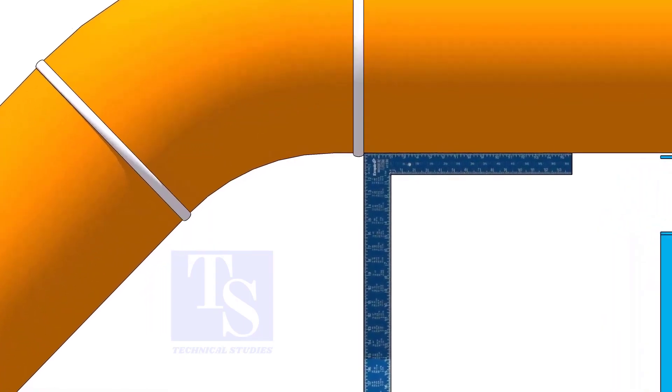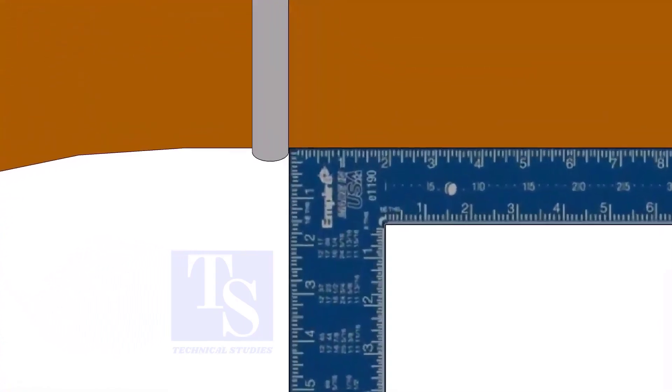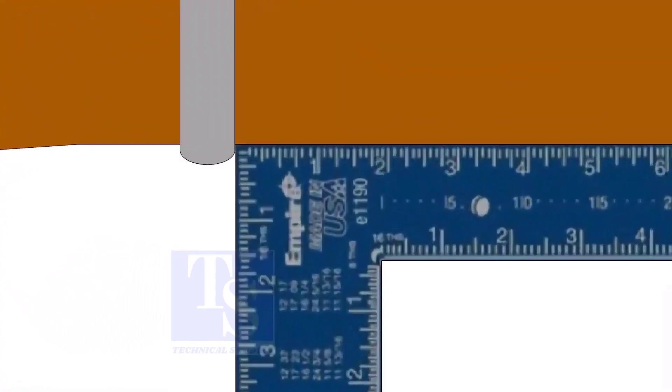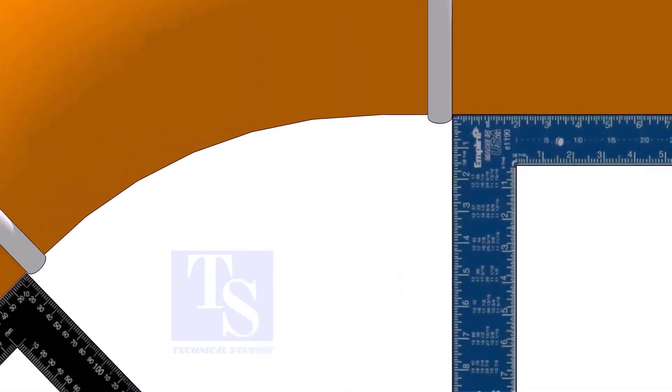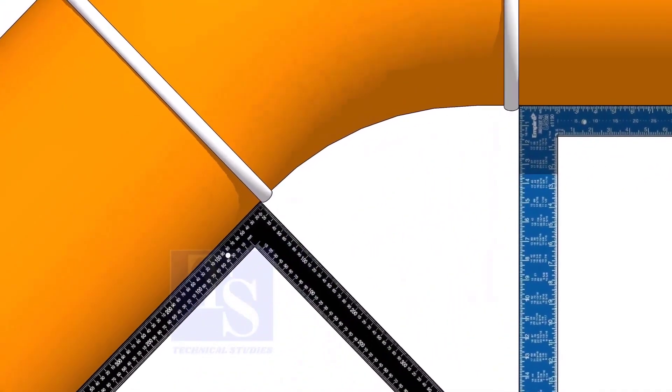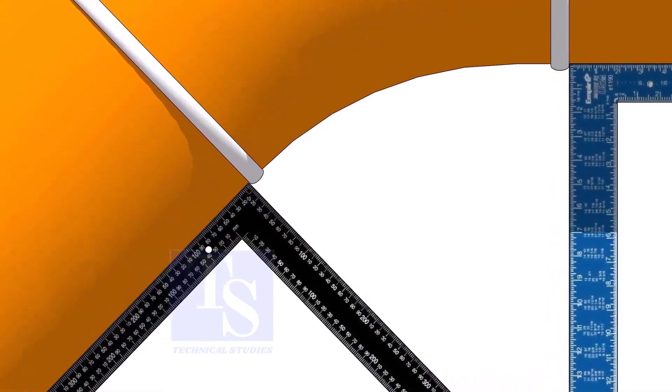Hold one right angle on the pipe just outside the weld joint, as shown. Hold another right angle on the other pipe. Make sure both right angles are sitting on the center of the pipe.